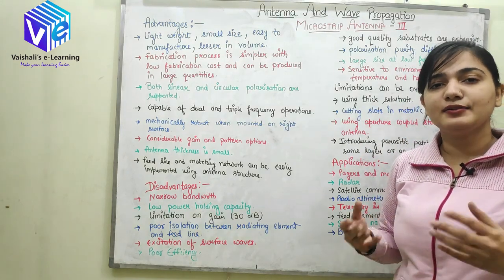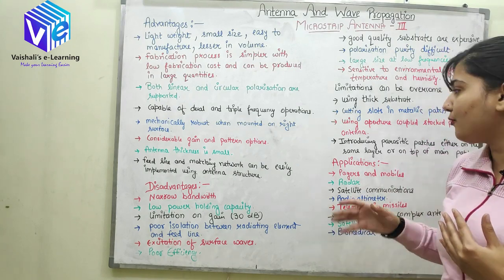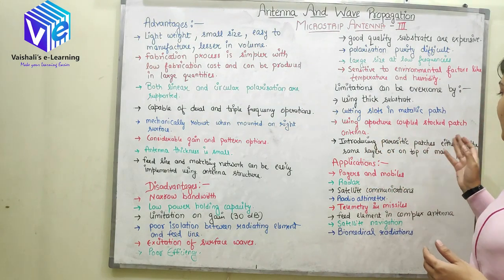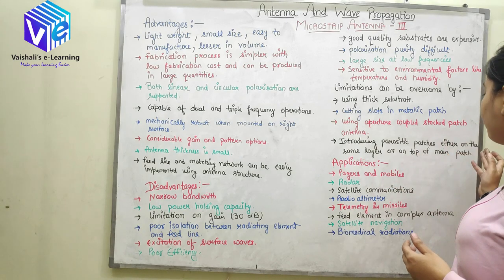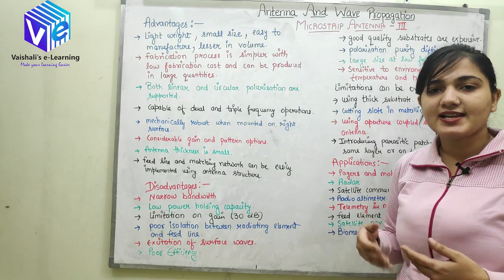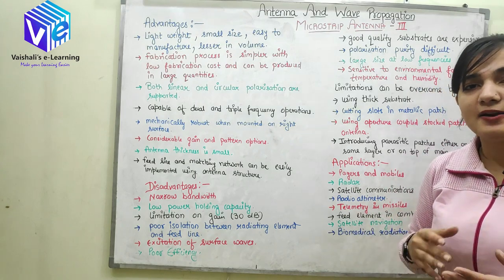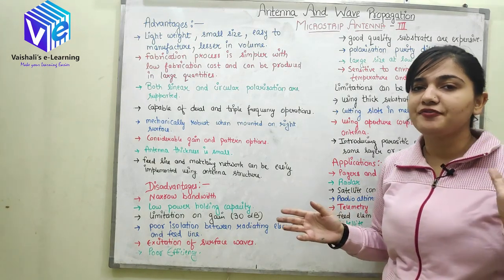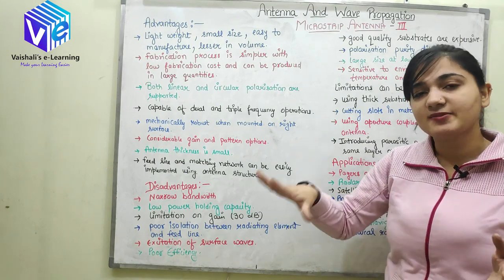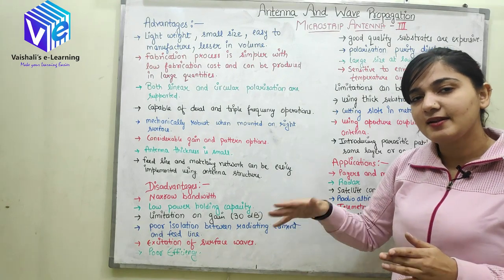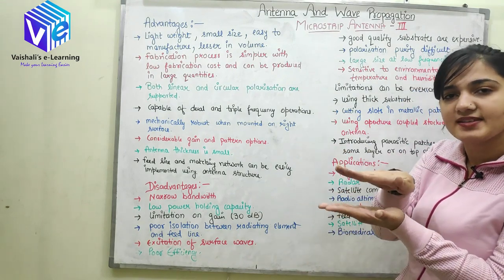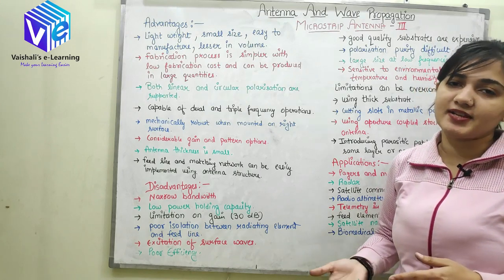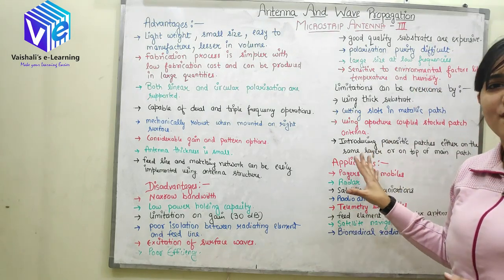The next technique is introducing parasitic patches either on the same layer or on top of the main patch. The main patch gets excited, and an additional parasitic element — one not fed with the feed line, so not directly excited — can be placed either on the same layer or on top of the patch. This helps overcome some other disadvantages as well.